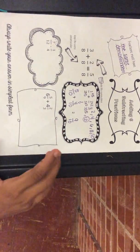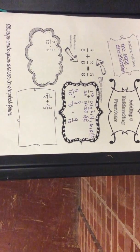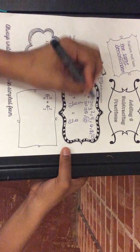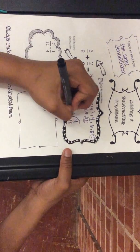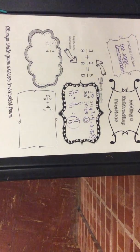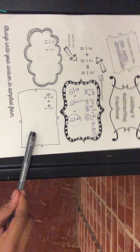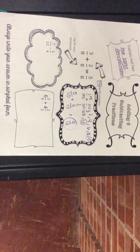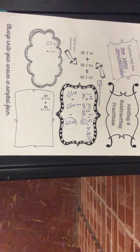So five over ten plus four over ten equals nine over ten. Make sure that if you can simplify, then simplify it — but for this one you cannot simplify, so nine over ten is your answer. Now let's move on to subtracting fractions.